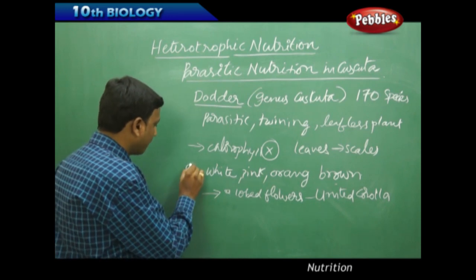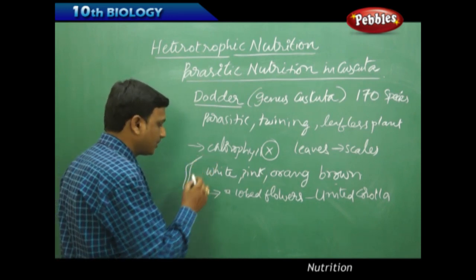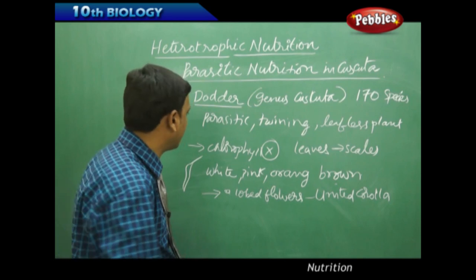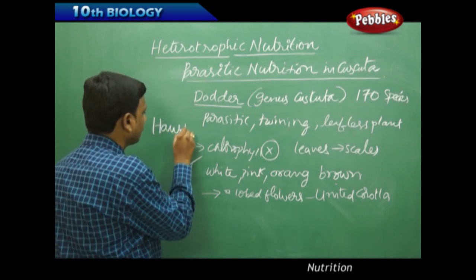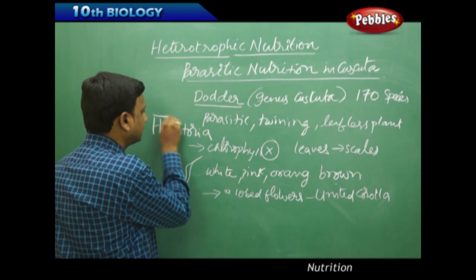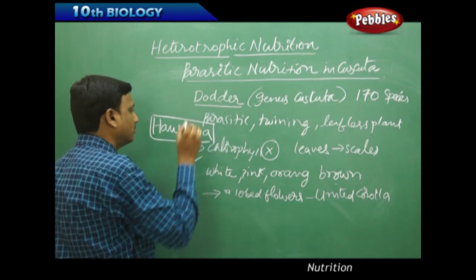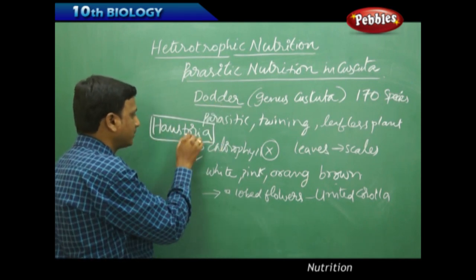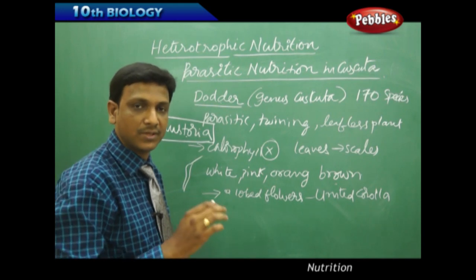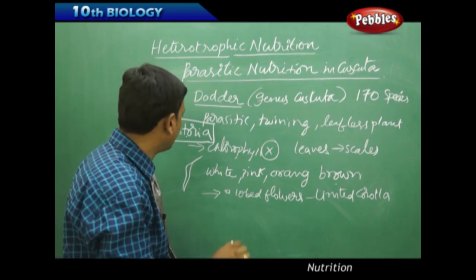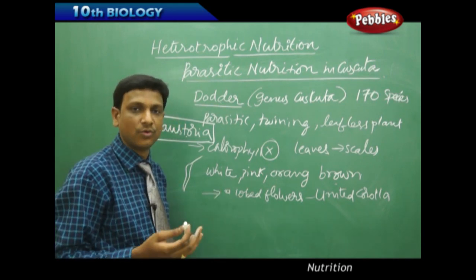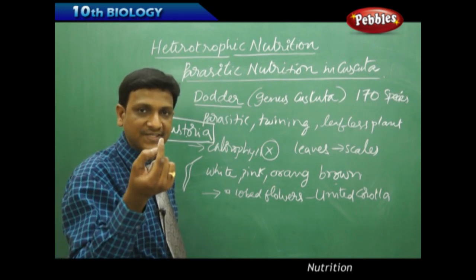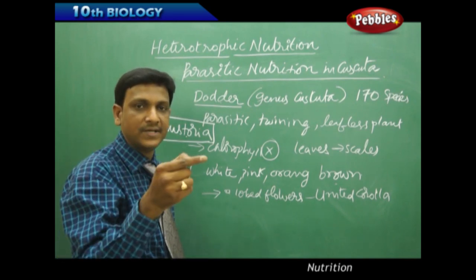These dodder plants form a spine-like structure, a short spine-like structure called haustoria. This is a very important part regarding the dodder plant's life cycle and its mode of nutrition. Haustoria helps the dodder plant absorb the nutrients from the host plant. With this spike-like structure, it will poke into the shoot of the host plant.